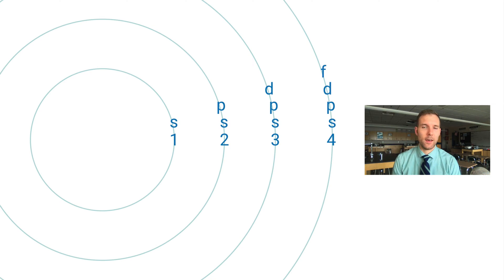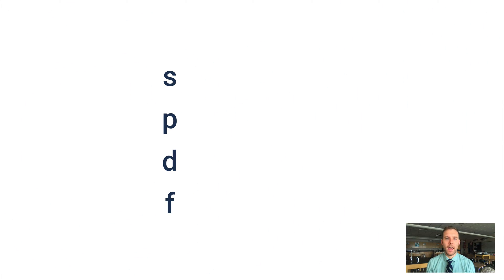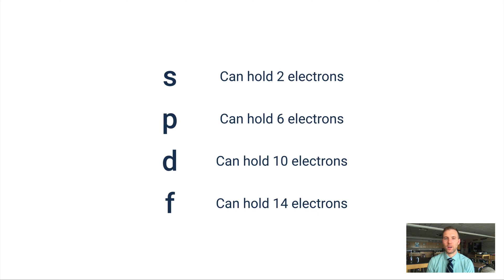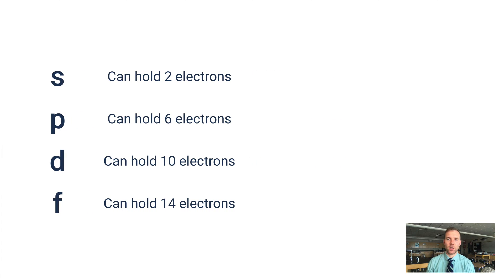Let's look at this a slightly different way. An S subshell can hold only 2 electrons, a P subshell can hold 6, a D subshell can hold 10, and an F subshell can hold 14. There's a pattern here: as we move from S to P to D to F, we're able to hold four more electrons than the previous subshell.